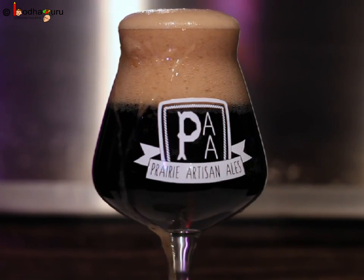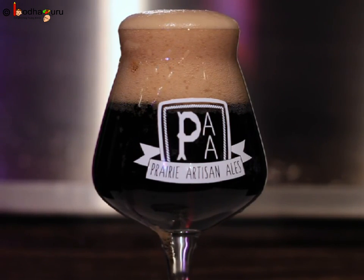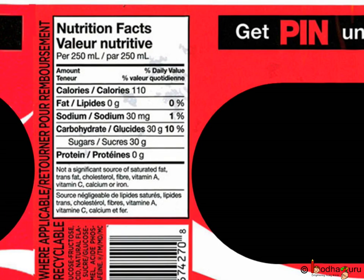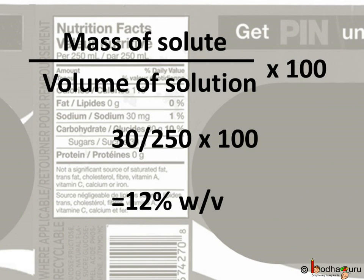So it is a homogeneous mixture, which means the components of the mixture are uniformly distributed throughout the drink. When you buy a soft drink, you can look at the label to know what is in it and how much. Here the label says every 250 ml has 30 grams of sugar — and that's a lot of sugar. The mass concentration of solute, i.e. sugar, is 30 grams per 250 ml.